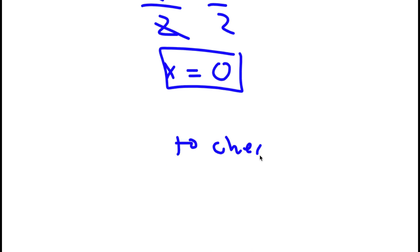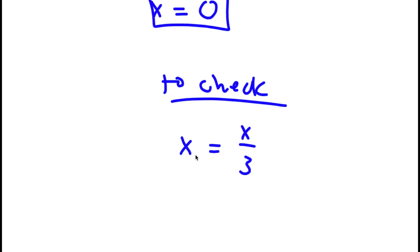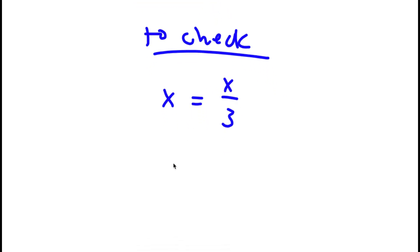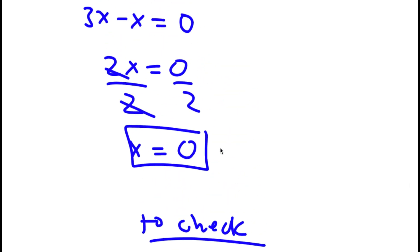Now to check — I had x is equal to x over 3. We know that x equals 0. So now I have 0 is equal to 0 over 3. Well, 0 divided by any number is equal to 0. So I have 0 equals 0, and because this is right, my solution is right.